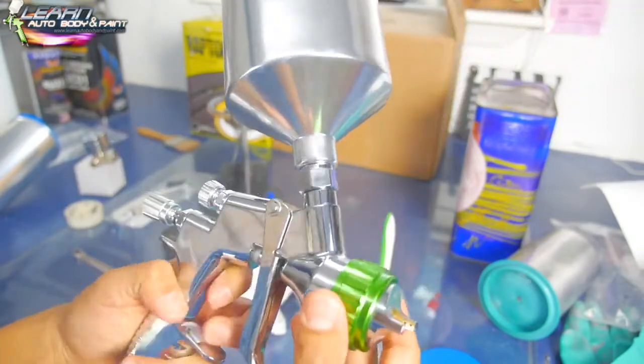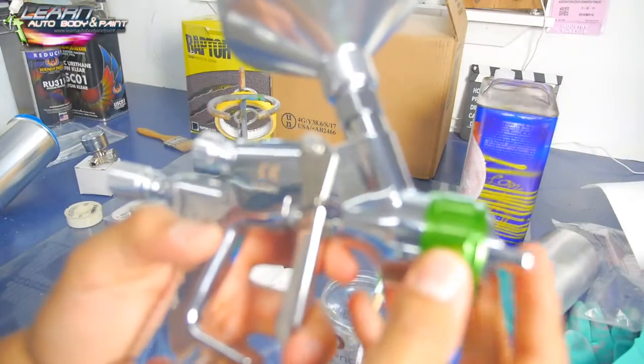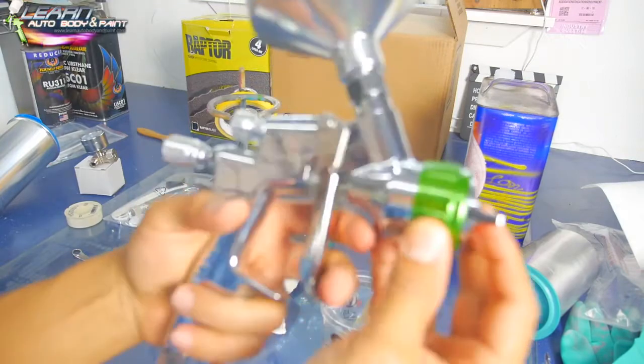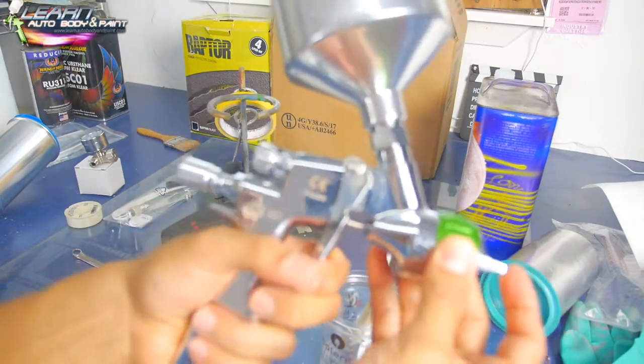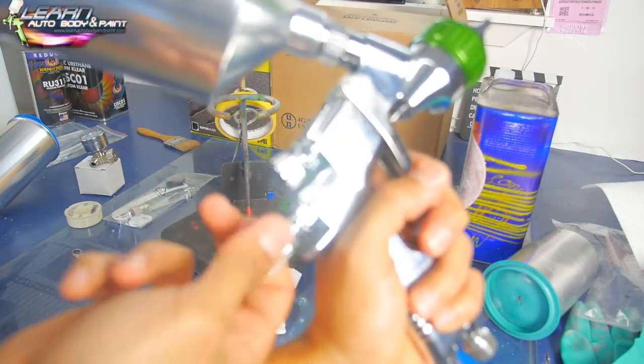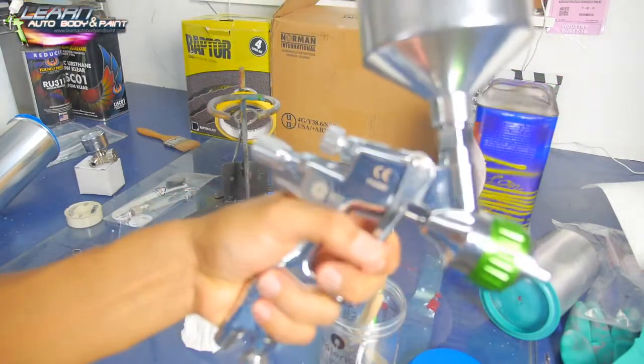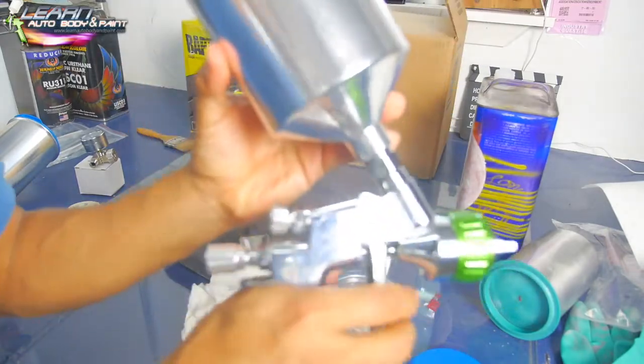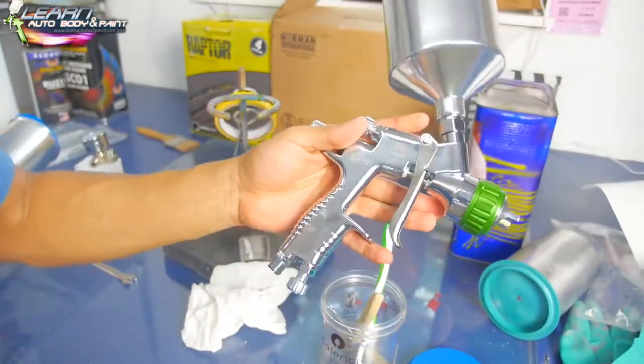Now what we do to set the fluid flow - what I like to do is always have full throttle fluid flow. The way to do it is hold your trigger down all the way when this is out, and then tighten it until you feel it just get a little tight. And then that's pretty much full open fluid flow. So now your gun is pretty much set up to spray. All cleaned inside and there you go.